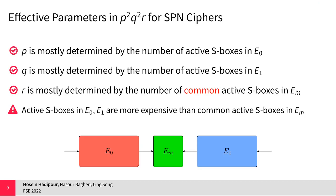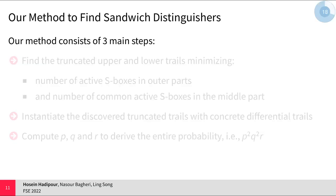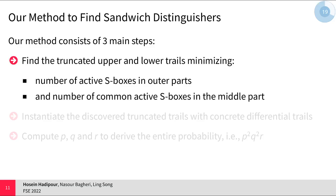With this brief introduction, I'm going to introduce our new method to search for sandwich distinguishers for SPN block ciphers. Our method can be divided into three main steps. The first step, which is the most important, is devoted to finding two appropriate upper and lower differential trails, minimizing the number of active S-boxes in the outer parts as well as the number of common active S-boxes in the middle part. I will discuss this step in more detail in the next slides.